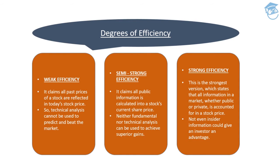When those two pieces of information combined, the stock price went down sharply. Semi-strong efficiency claims that all public information is incorporated in the current stock price. Therefore, neither technical analysis nor fundamental analysis can be used to achieve superior gains. The only strategy is to buy at lower prices and sell once the stock recovers to a good level.